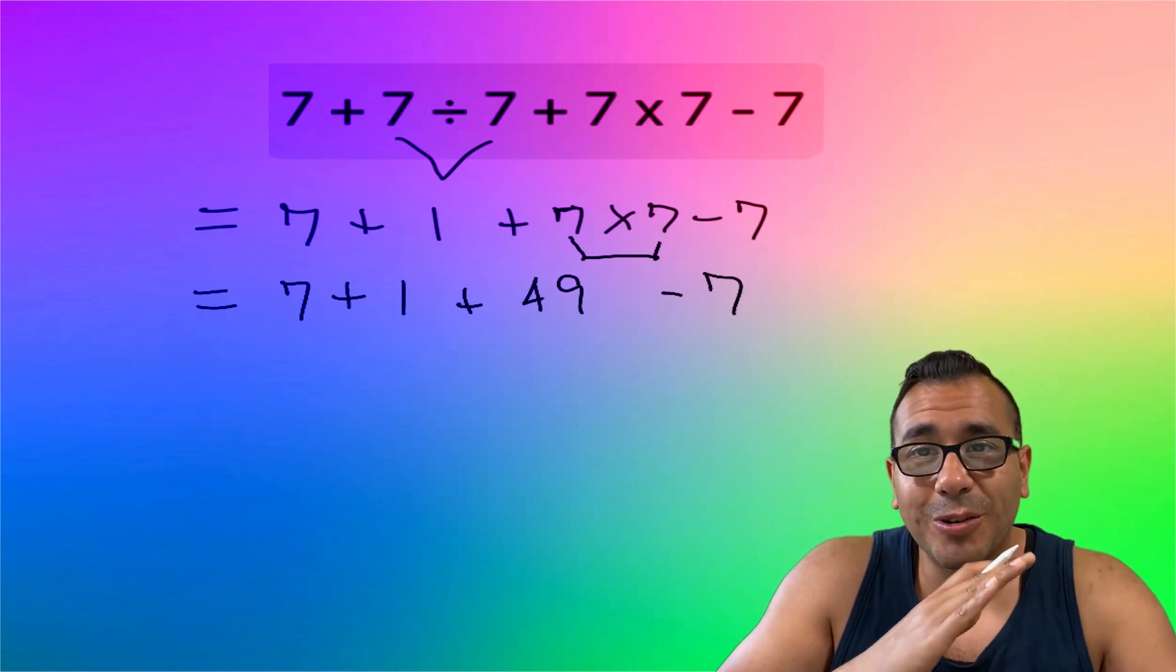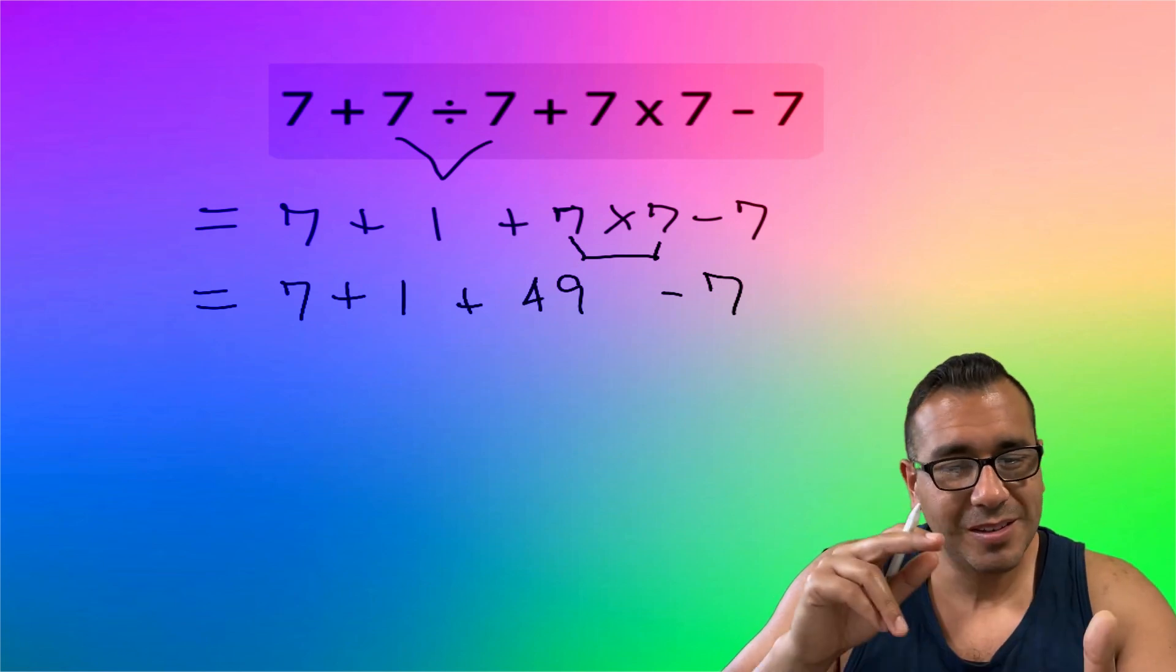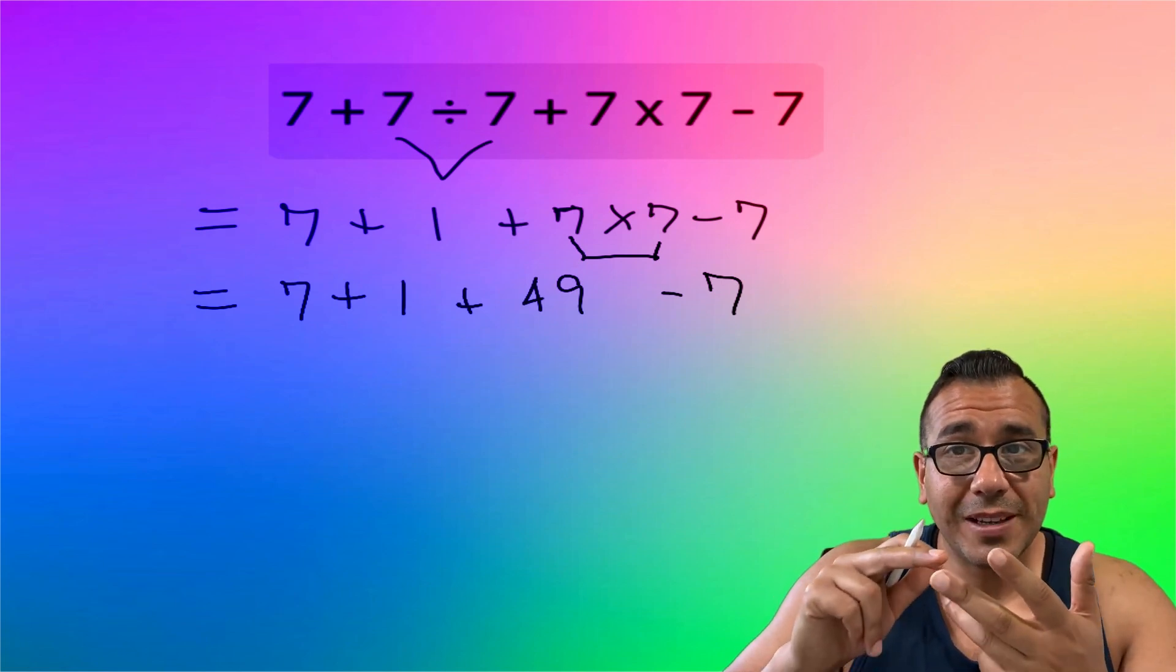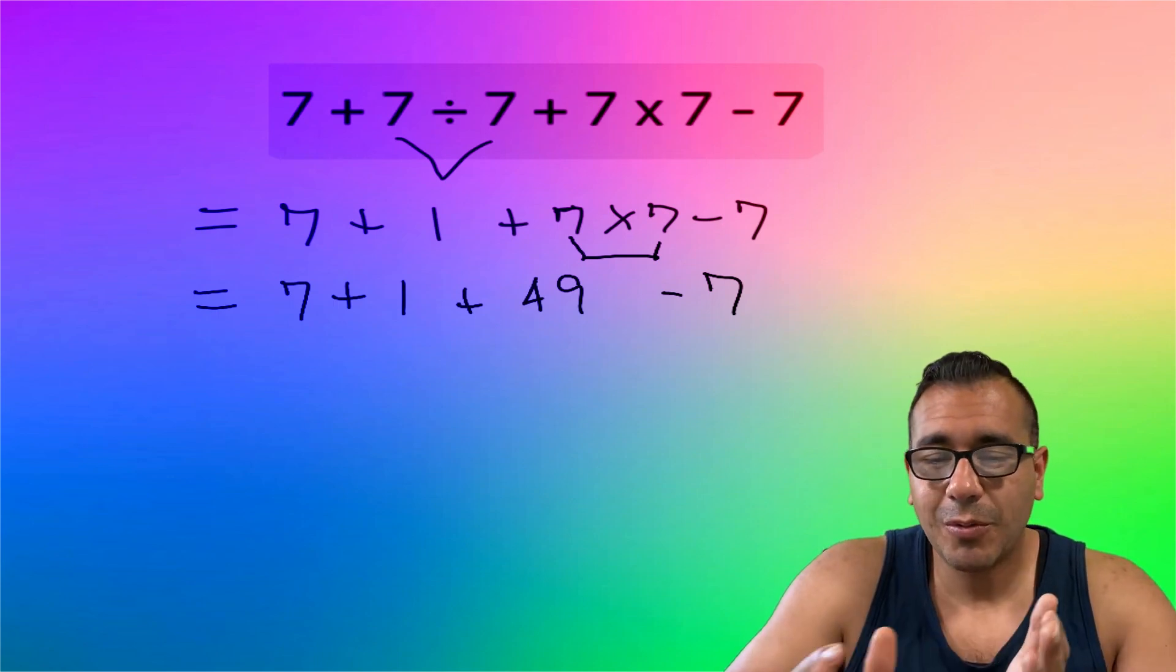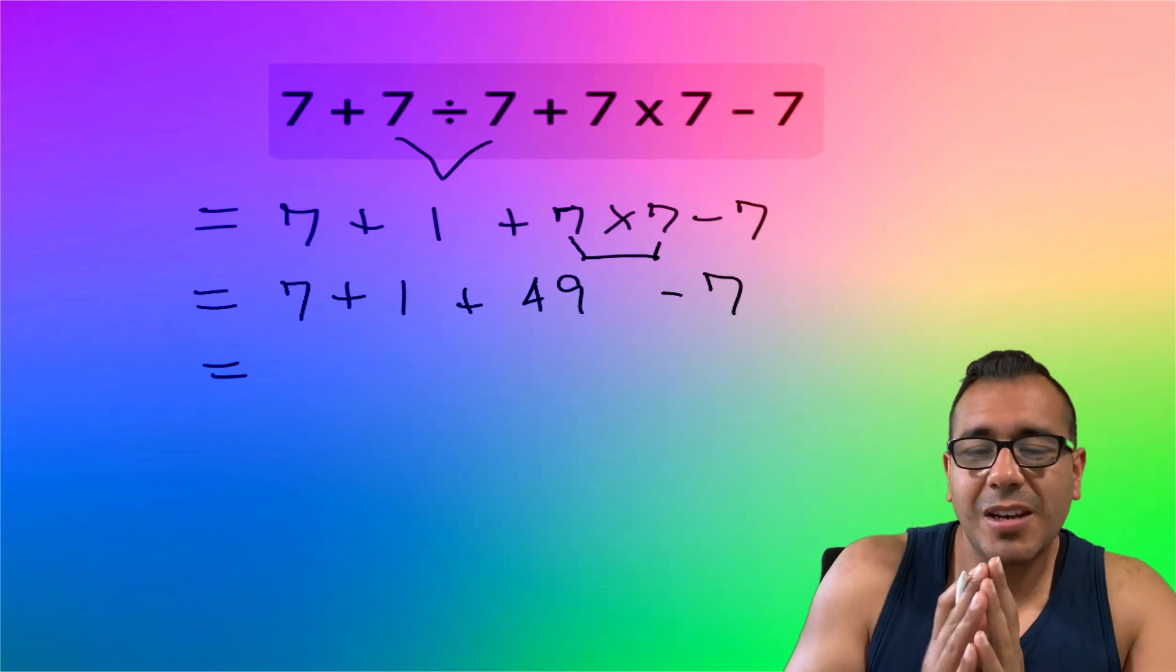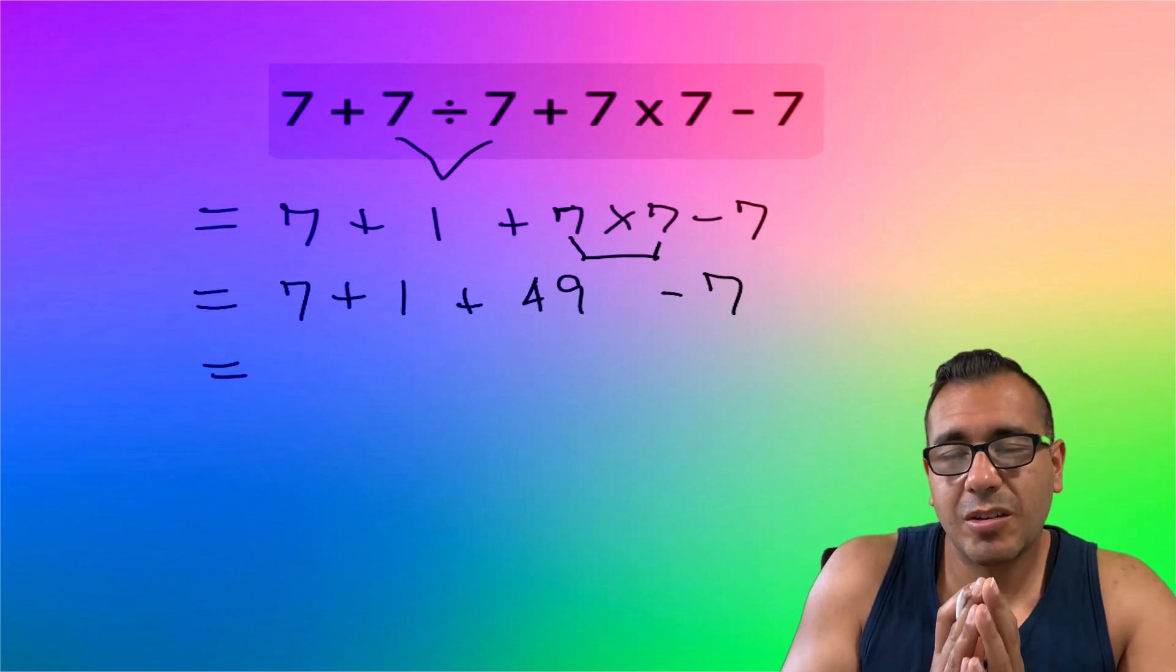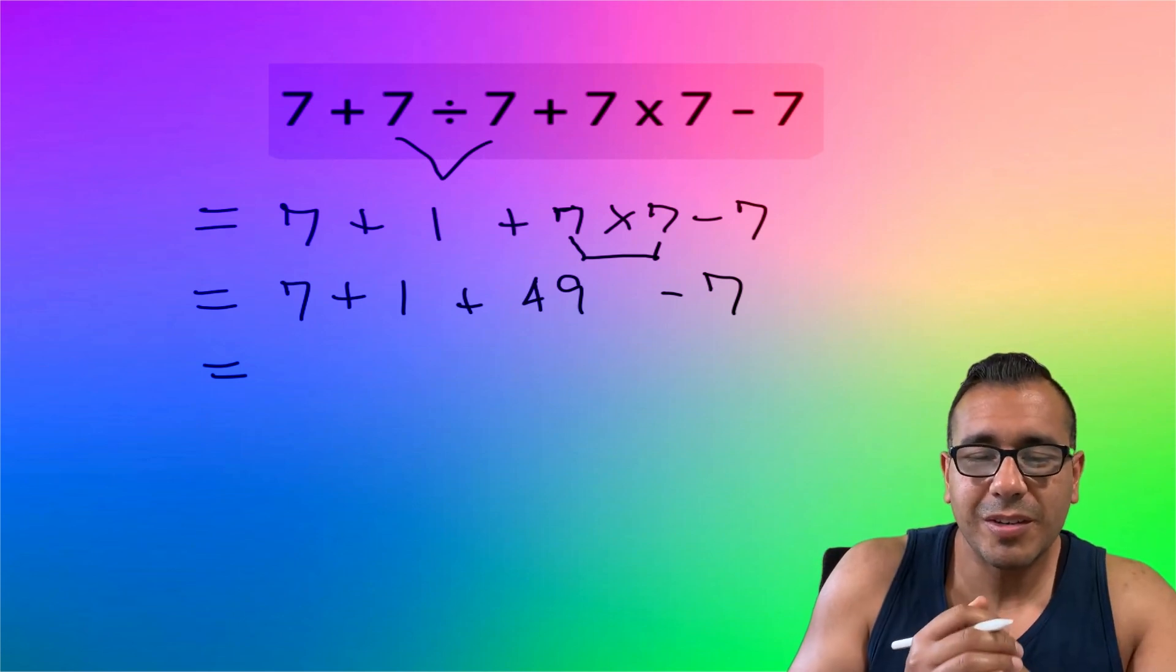So now you can handle your addition and subtraction, because there's no more parentheses, no exponents, no multiplication, nor division. Now we add and subtract from left to right. And again, if you do this right it won't matter because addition is commutative, so I could rearrange our numbers here, but here we're just going to go in order.